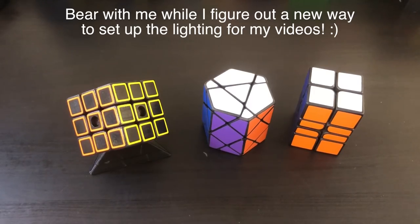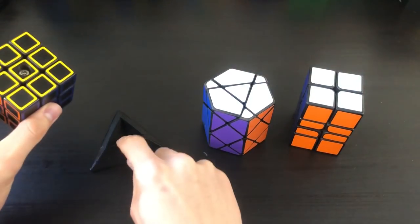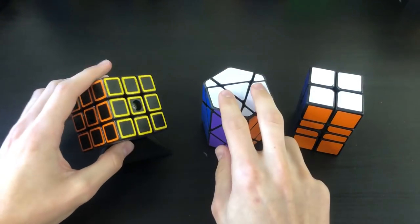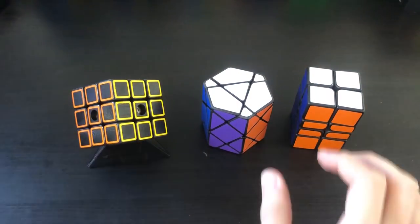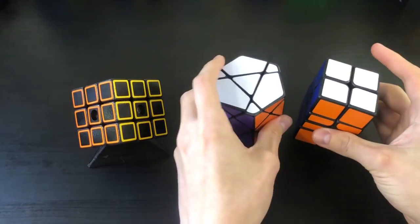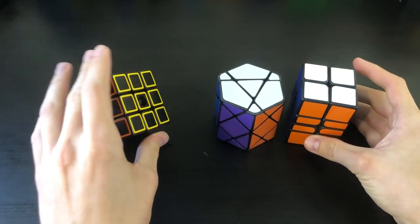Alright, so here I have four puzzles, it may look like three, but here we have the 180 cube, we have a puzzle cube stand, we have a hexagonal prism, and we have a half proportional 2x2x4. Now, I'm going to be only going over these two puzzles in this video, and then I'll be going over these two in a separate video.